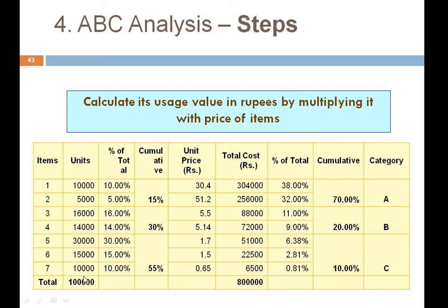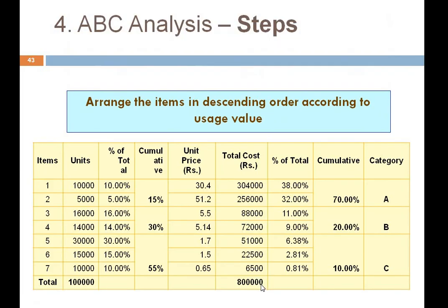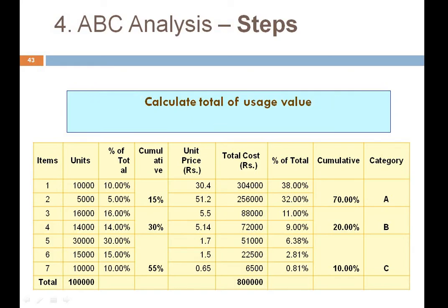So in total: one lakh units and eight lakh rupees. The third step is to arrange items in descending order according to usage value. The highest amount is at the top — 3,04,000 — followed by 2,56,000, then 88,000, 72,000, 51,000, 22,500, and 6,500. We need to arrange all items according to their total annual cost.